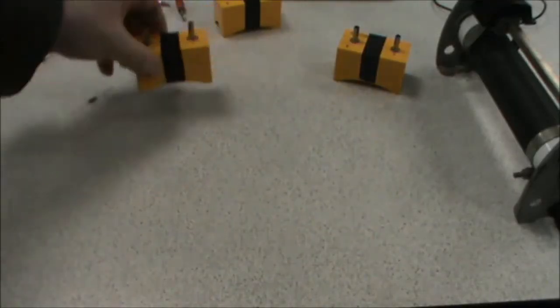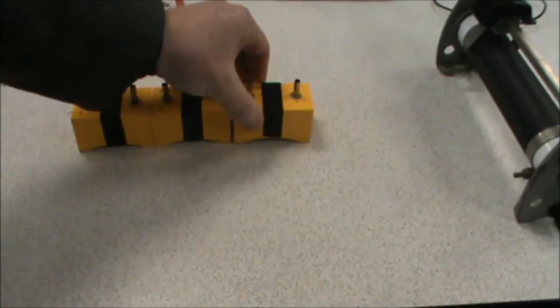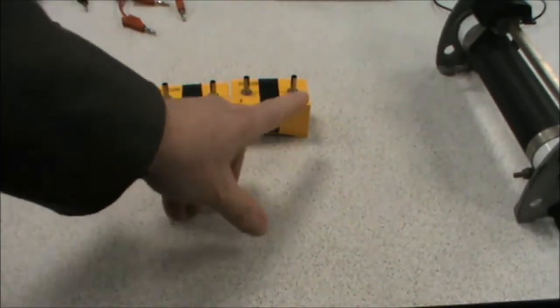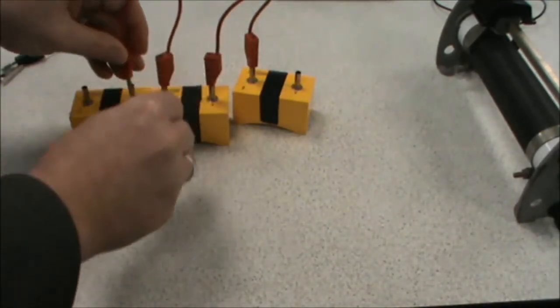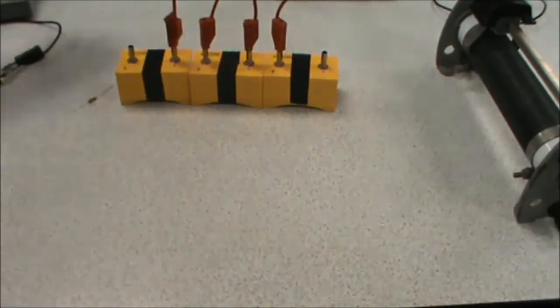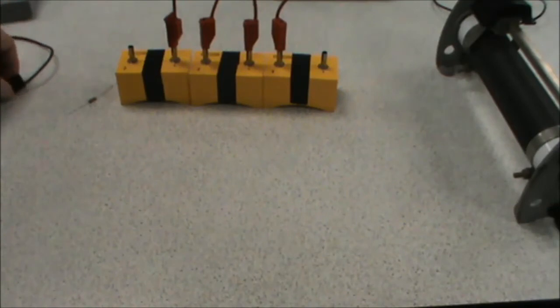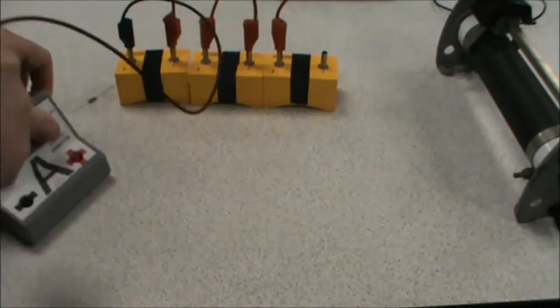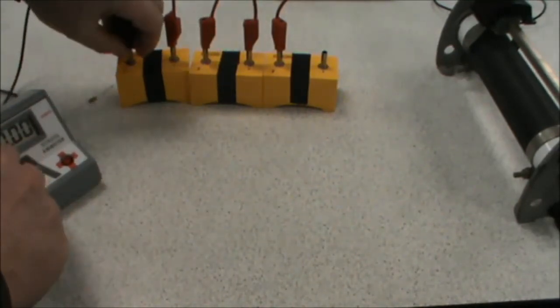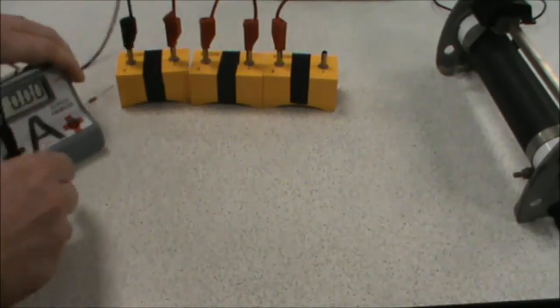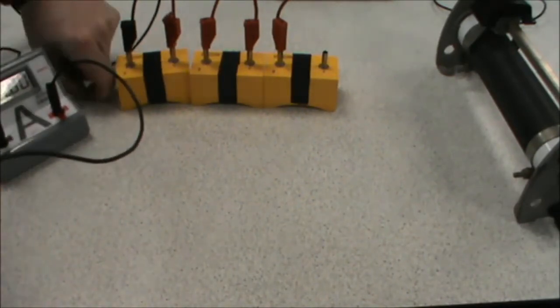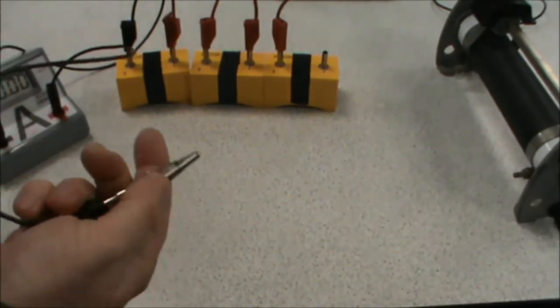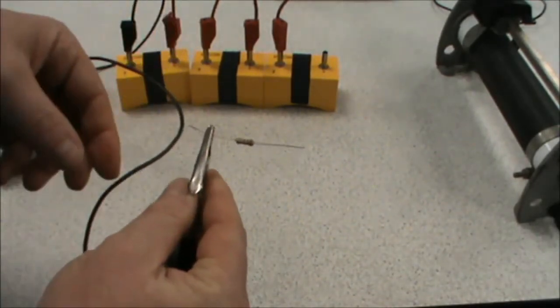So here we go. We start off with our cells. We need to make sure that the polarity of the cells is all the same. So we've got the plus on each side and we connect those up. From there we connect up to our ammeter.